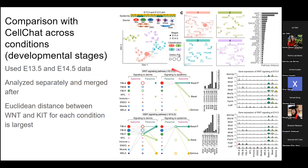Looking at the Wnt signaling pathway, you can visually see it's very different at 13.5 versus 14.5 days. In dermis-to-dermis signaling, there's nothing at 13.5 days, but at 14.5 days there's just so much activity. The different clustering and different locations in the manifold make a lot of sense when you look at the structure of the network.